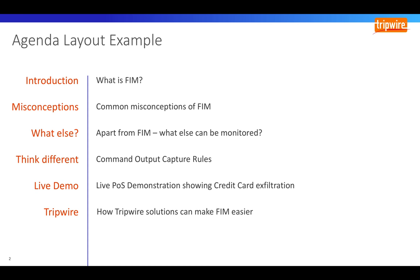I will then introduce you to command output capture rules, also known as COCA. This is where I'm going to ask you to think differently about integrity monitoring and give you some examples of this powerful feature. We will then conduct a live demonstration of Tripwire Enterprise where I will emulate a famous breach that occurred to a US retail store a few years ago. During this demo we will attack a point of sale device and extract credit card numbers. We will see how Tripwire Enterprise will detect and remediate this type of attack. And finally we'll show you how Tripwire solutions can make FIM easier and summarize with some key takeaways.